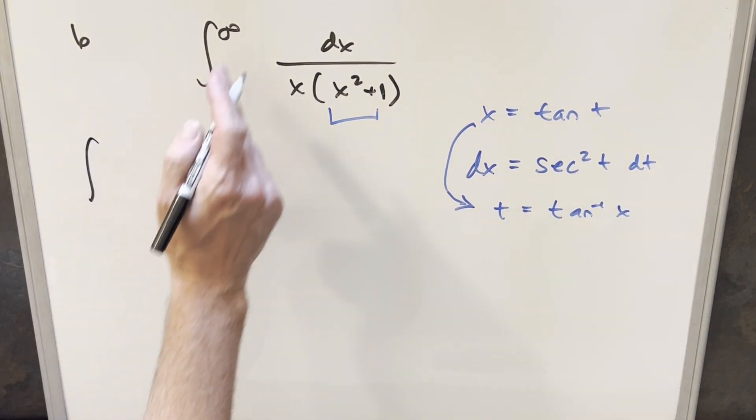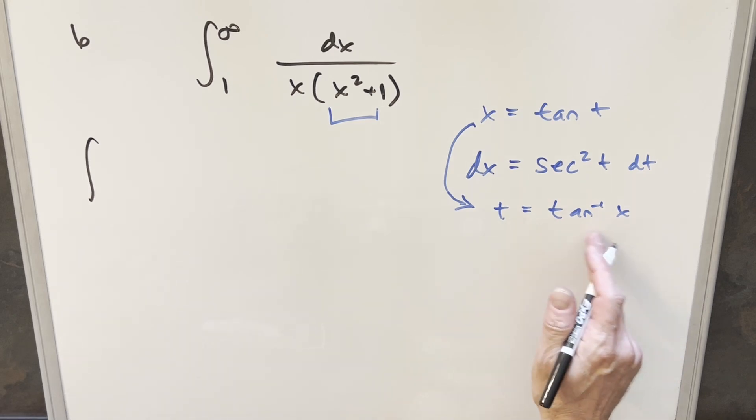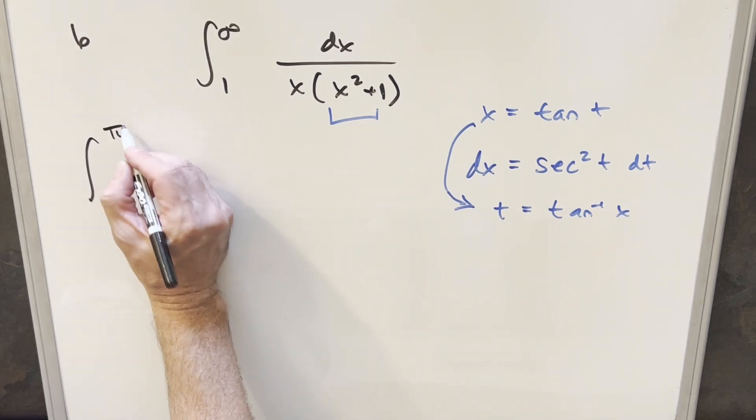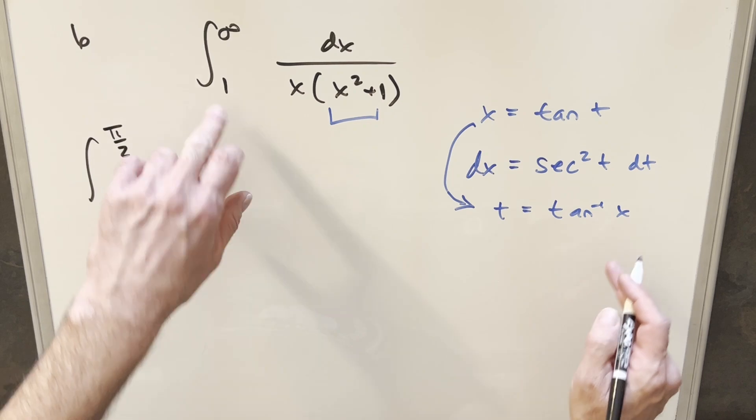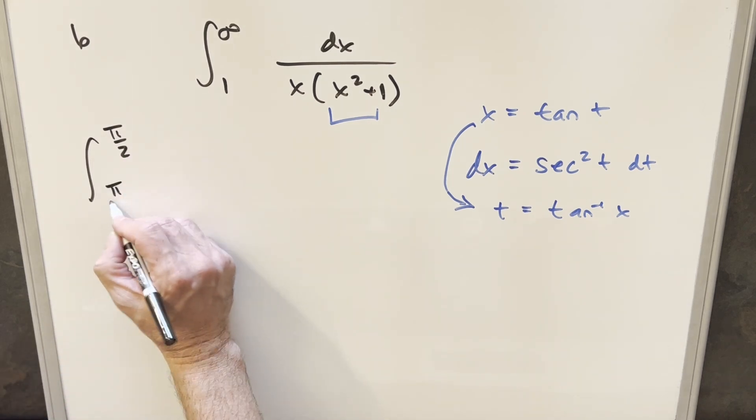Then we go ahead and substitute. First, looking at infinity, plugging it right here, arctan of infinity is going to be happening at pi over 2. Then for 1, arctan of 1 is just going to be pi over 4.